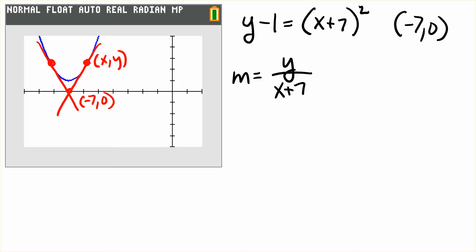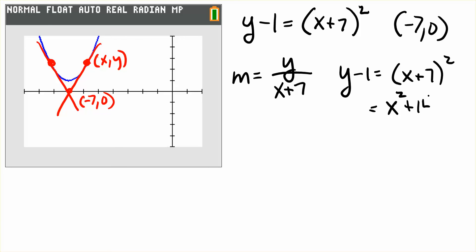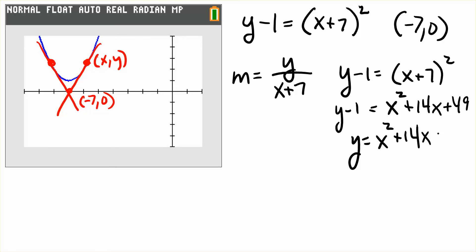That slope also has to equal the derivative, because the derivative is the slope of the tangent line. So first we'll work on our y. We have y minus 1 is equal to x plus 7 quantity squared. Multiplying out x plus 7 gives x squared plus 14x plus 49, and solving for y gives us x squared plus 14x plus 50.